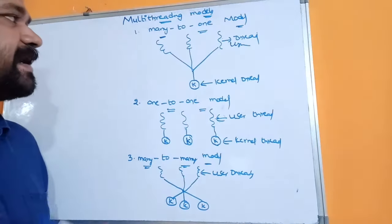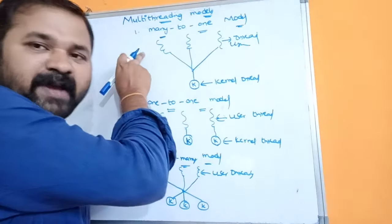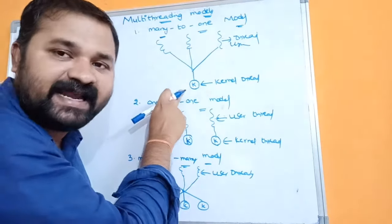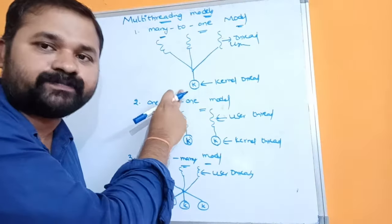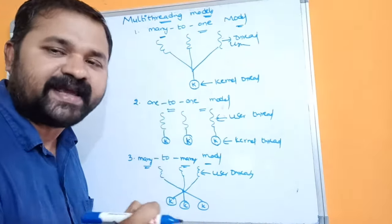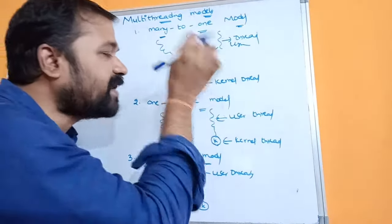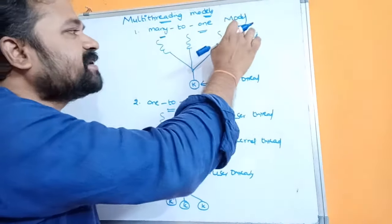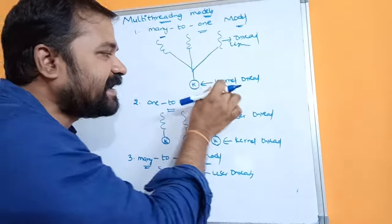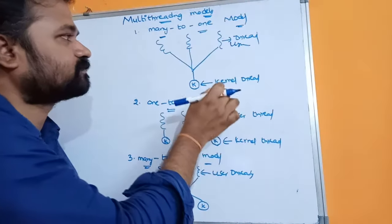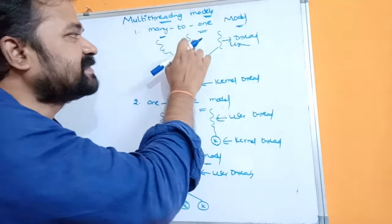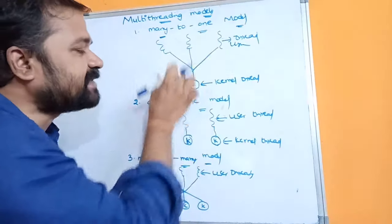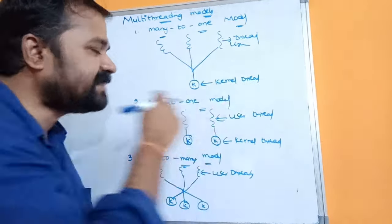In the many-to-one model, many user threads are mapped to a single kernel thread. That means for a process, only one kernel thread will be created and all user threads are mapped to this kernel thread. Here we have three user threads, and these three user threads are mapped to this single kernel thread.